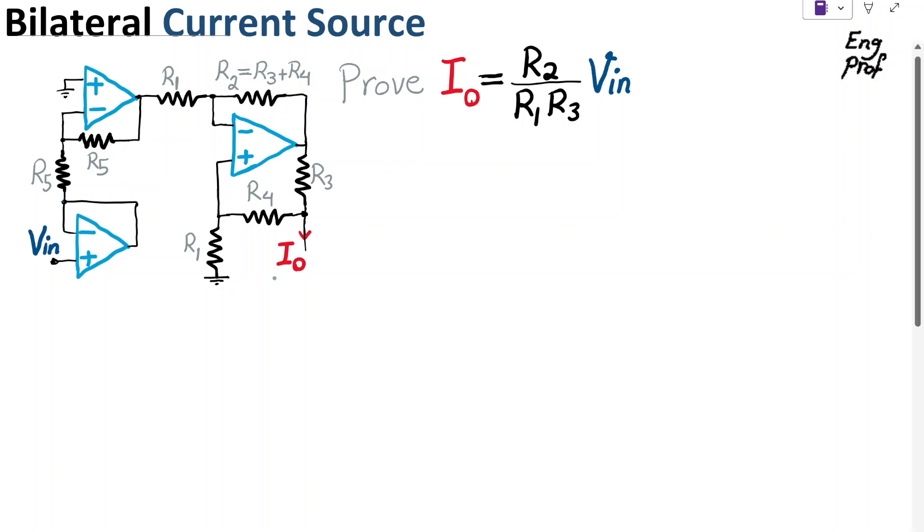A voltage-controlled bilateral current source that is generating current I_out that can come out or can go in depending on whether we apply a positive or negative V_in is shown and designed here using 3 op-amps. We refer to it as bilateral because it's two-way. It can generate the current out and in.